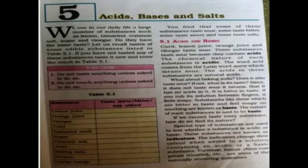Some naturally occurring indicators are turmeric, litmus, china rose petal, and guthal, etc.